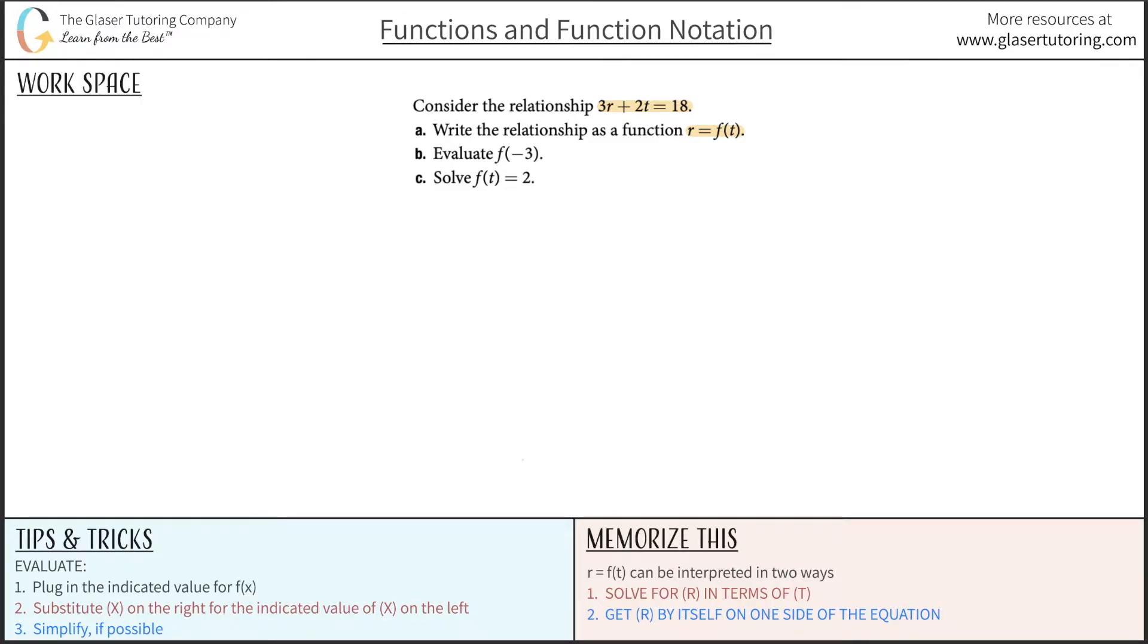So how to reinterpret r equals f(t), it's to basically say solve for r in terms of t. That also means, simplifying that even further, it means just get r by itself on one side of the equation, everything else onto the other. That's the way I like to look at it.